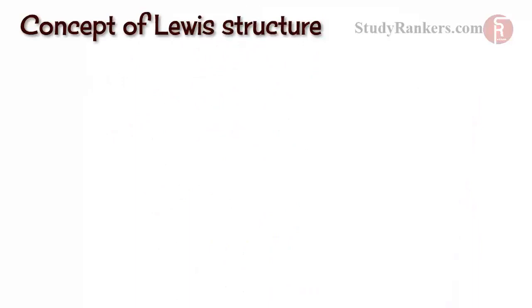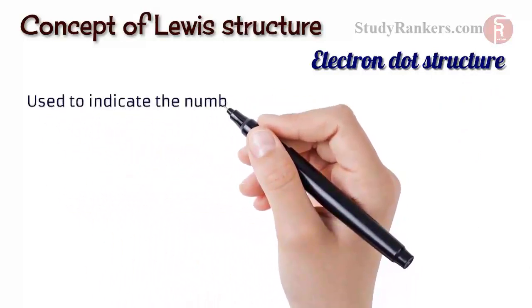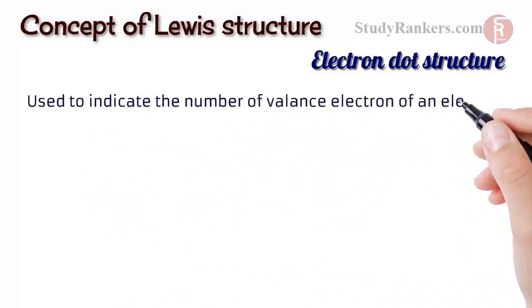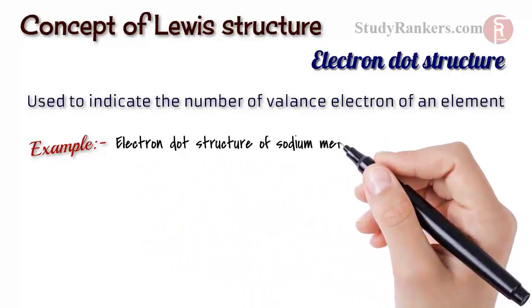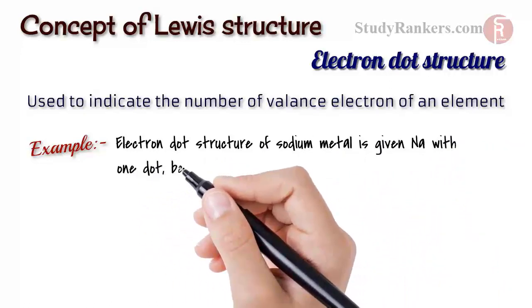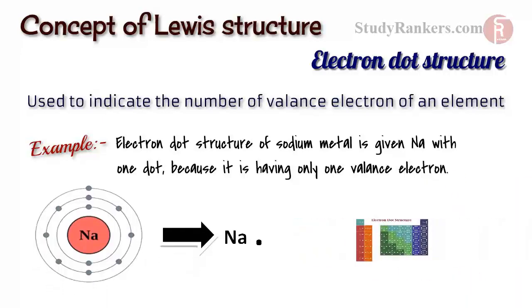Well, how do these reactions of metals take place? Before that, let's understand the concept of Lewis structure, also known as electron dot structure. It's a representation used to indicate the number of valence electrons of an element. It is given as element symbol with as many dots as the number of valence electrons the atom is having. For example, electron dot structure of sodium metal is given as Na with one dot because it has only one valence electron. Similarly, electron dot structure of other metals can be written.